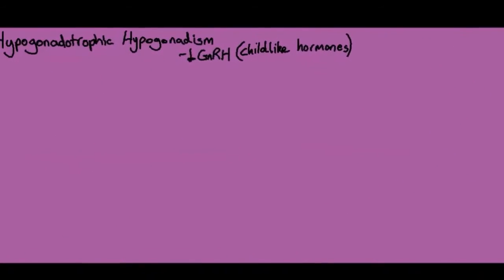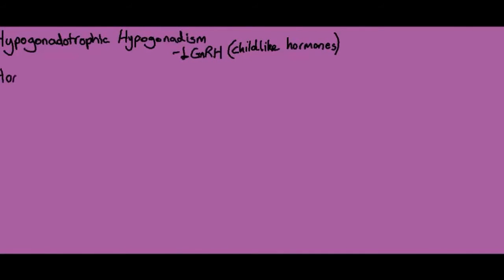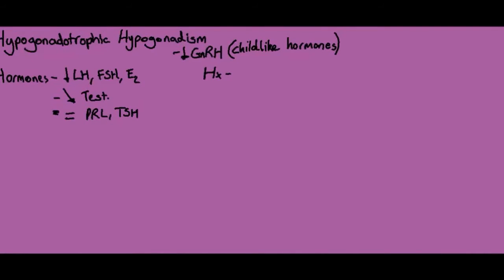The next condition is hypogonadotrophic hypogonadism. Breaking it down: hypogonadotrophic means low hormones going to the gonads, causing hypogonadism — the gonads aren't producing the hormones they should. Hormone results show low FSH, LH, and oestrogen. Testosterone is slightly decreased as the gonads produce some, but adrenals also contribute so it's not fully decreased. Prolactin and TSH will both be normal.